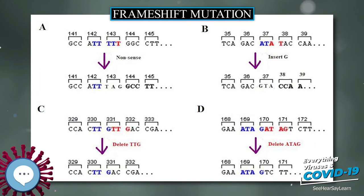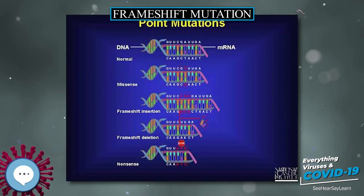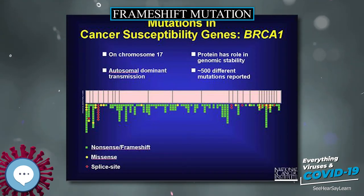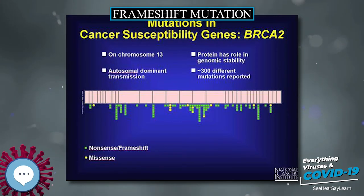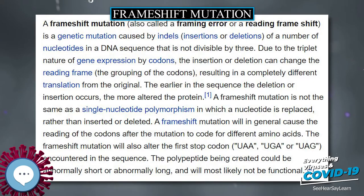Frameshifting may also occur during programmed translation, producing different proteins from overlapping open reading frames such as the gag-pol and retroviral proteins. This is fairly common in viruses and also occurs in bacteria and yeast. Reverse transcriptase, as opposed to RNA polymerase II, is thought to be a stronger cause of frameshift mutations. In experiments, only 3 to 13 percent of all frameshift mutations occurred because of RNA polymerase II. In prokaryotes, the error rate inducing frameshift mutations is only in the range of 0.0001.